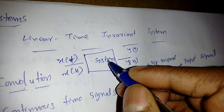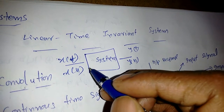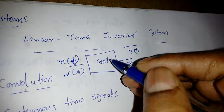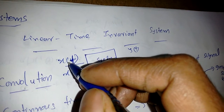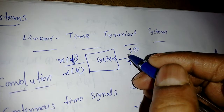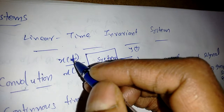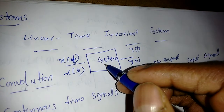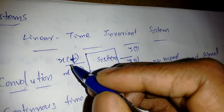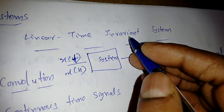Generally, for any system to respond to X of T, suppose X of T is changing — the system should respond linearly and produce some output. Whenever there is an input change, the corresponding output should also change. That is the meaning of linearity.